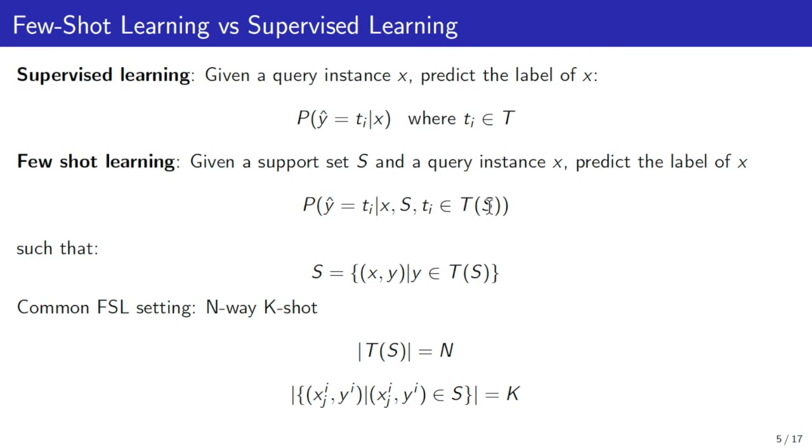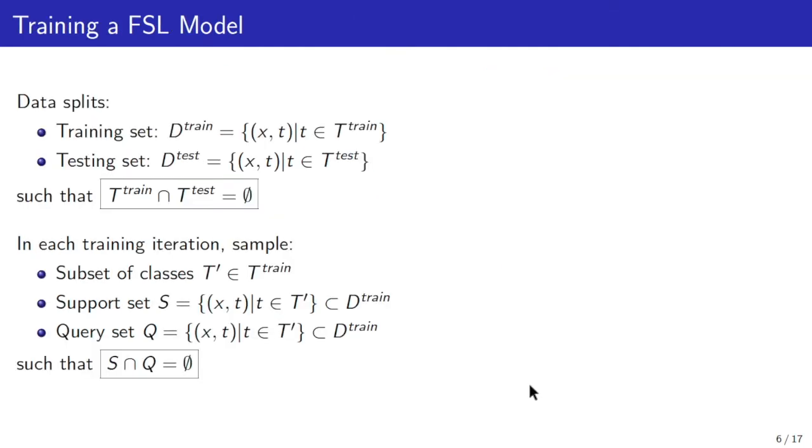In the literature, n-way k-shot is a common setting of few-shot learning where support set S contains n classes, and there are k examples for each class. In order to train a few-shot learning model, similar to supervised learning, we also need a training set D-train and a test set D-test. However, the set of labels in the training set and the testing set are disjoint. This is an important point to distinguish supervised learning and few-shot learning. In each training iteration, we need to sample a support set S and a query set Q from the training set such that S and Q are disjoint.